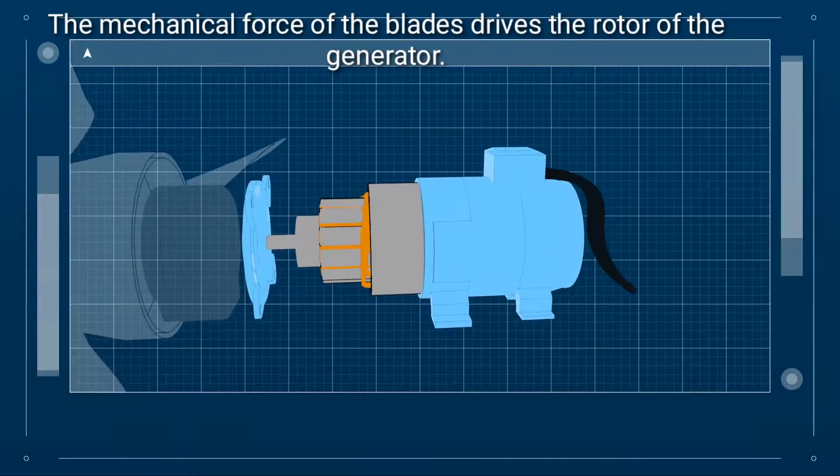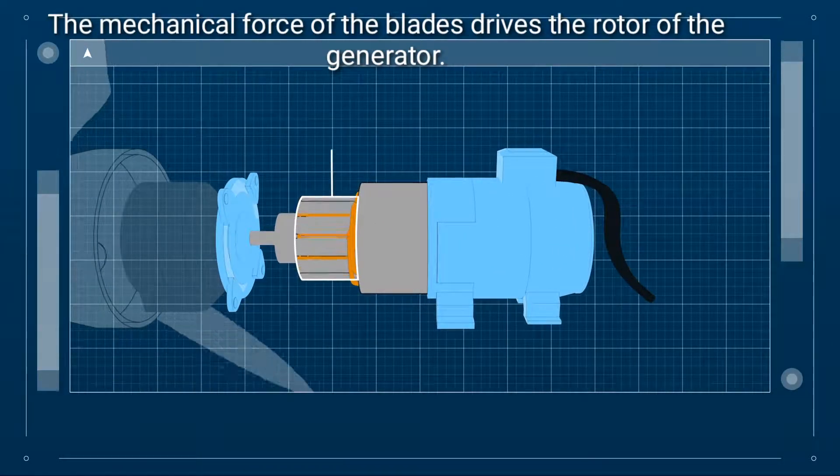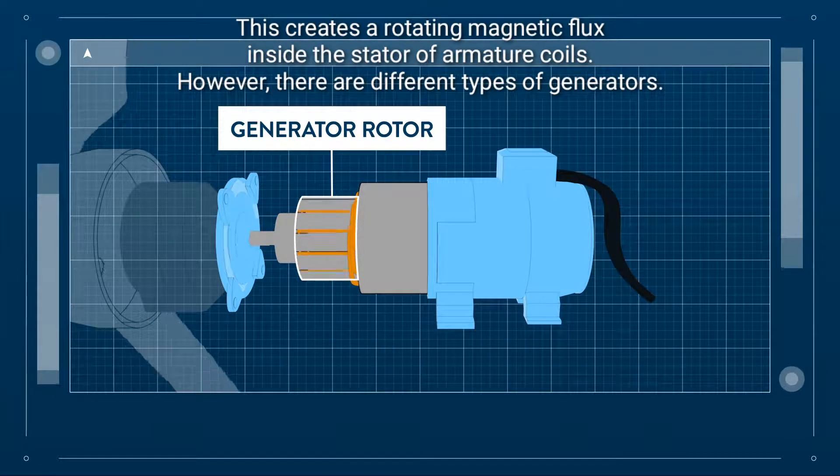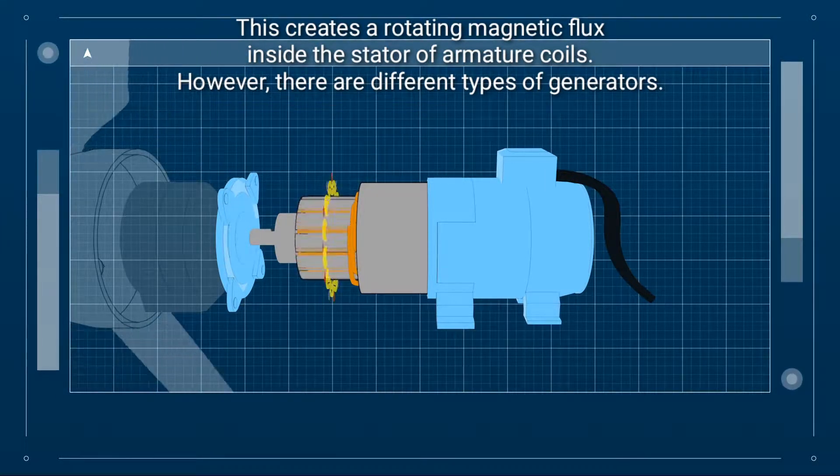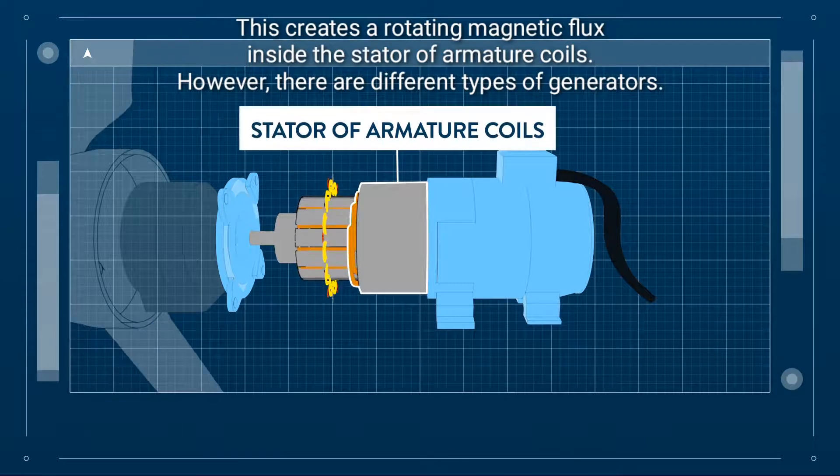The mechanical force of the blades drives the rotor of the generator. This creates a rotating magnetic flux inside the stator or armature coils.